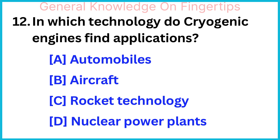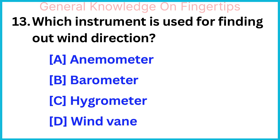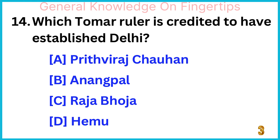Which instrument is used for finding out wind direction? Wind Vane. Which Tamil ruler is credited to have established Delhi? Anandpal.